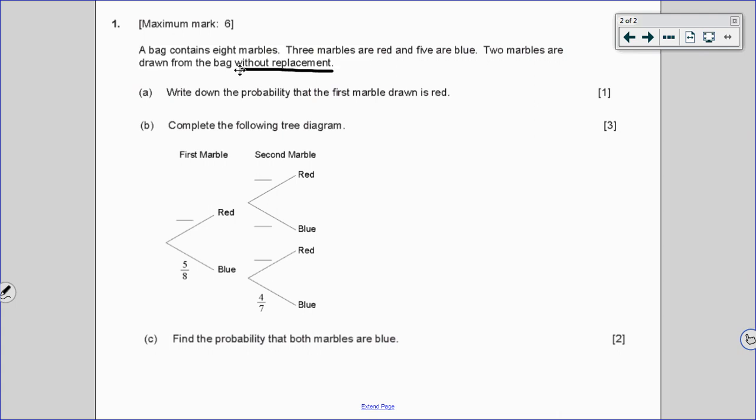Part A asks us just to write down the probability that the first marble drawn is red. So you should easily imagine going into the bag, pulling out a marble. The probability that it is red is going to be 3 out of 8 because there are 8 altogether and three of them are red. So that's a really straightforward one, no formula needed.